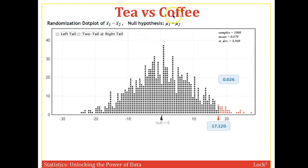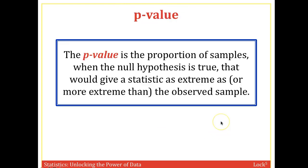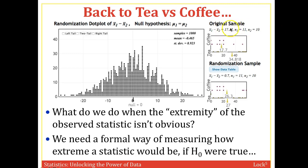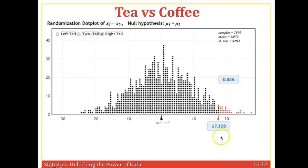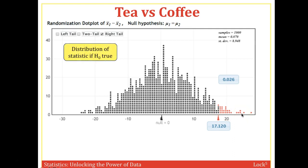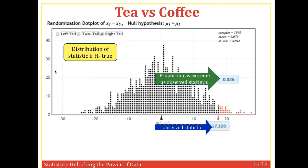Looking at the same tea versus coffee example: the null hypothesis is mu1 equals mu2 for the immune response system. The original sample statistic was 17.12. On this randomization distribution, 17.12 falls right here, and this data point represents the proportion of all the randomized samples that have this statistic or more extreme. The distribution shows what the statistic looks like if the null hypothesis were true, and the proportion as extreme as the observed statistic is your p-value.